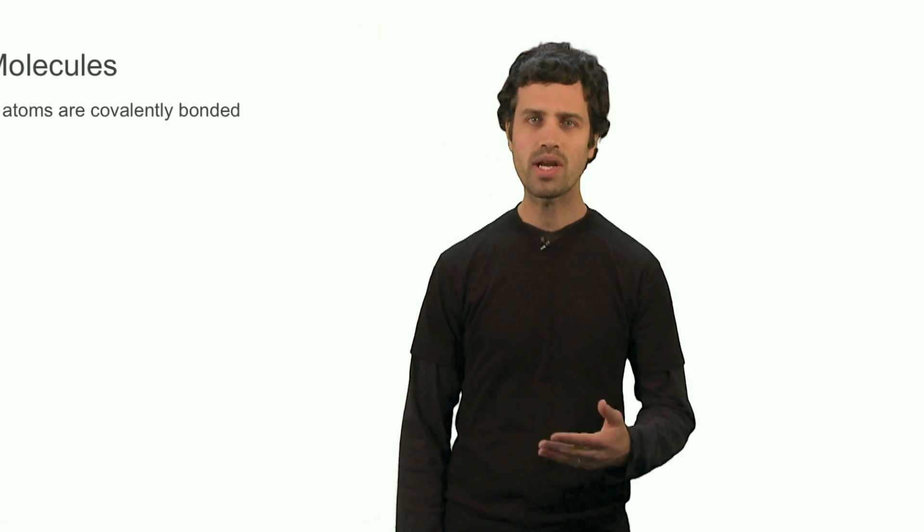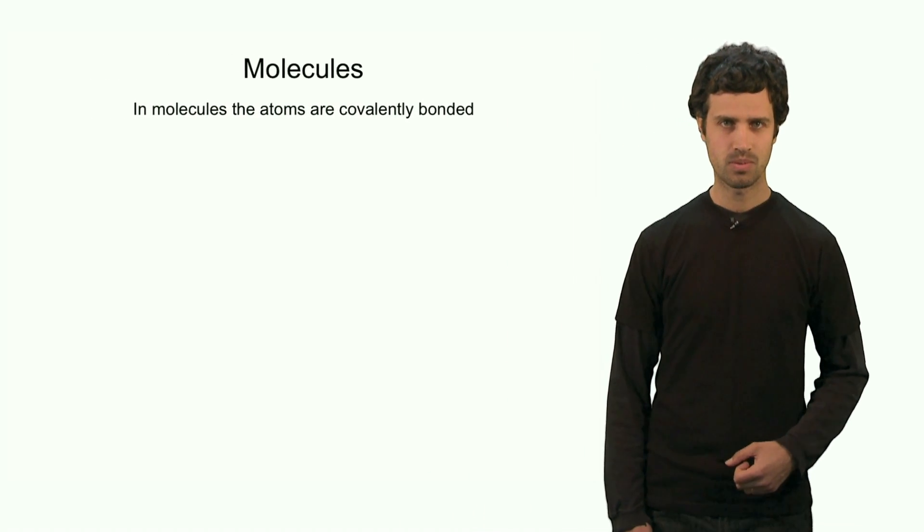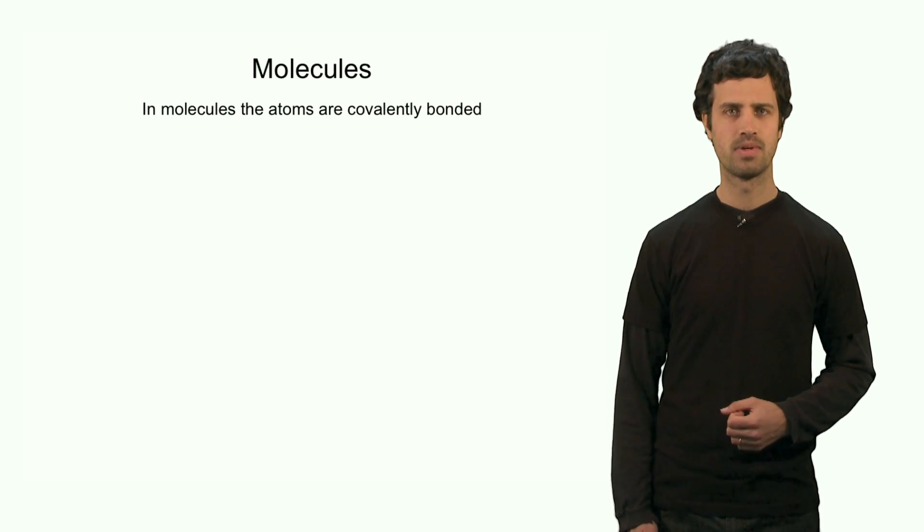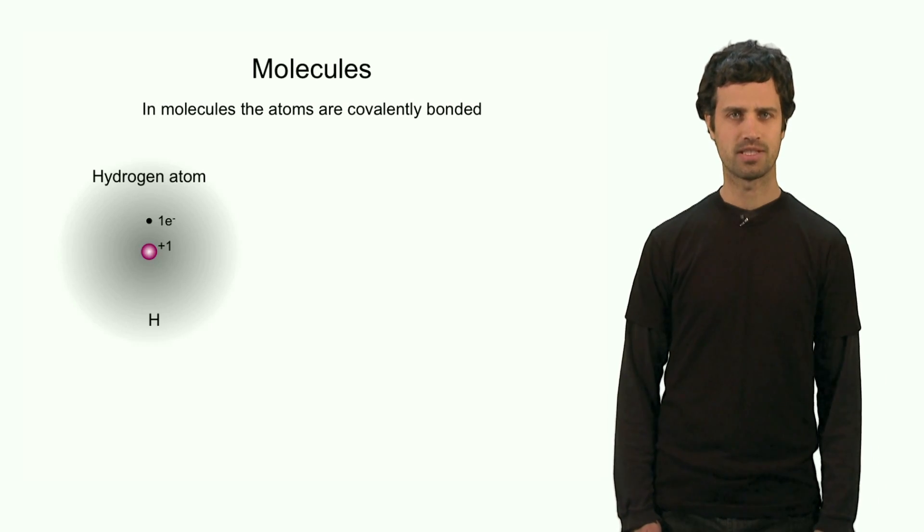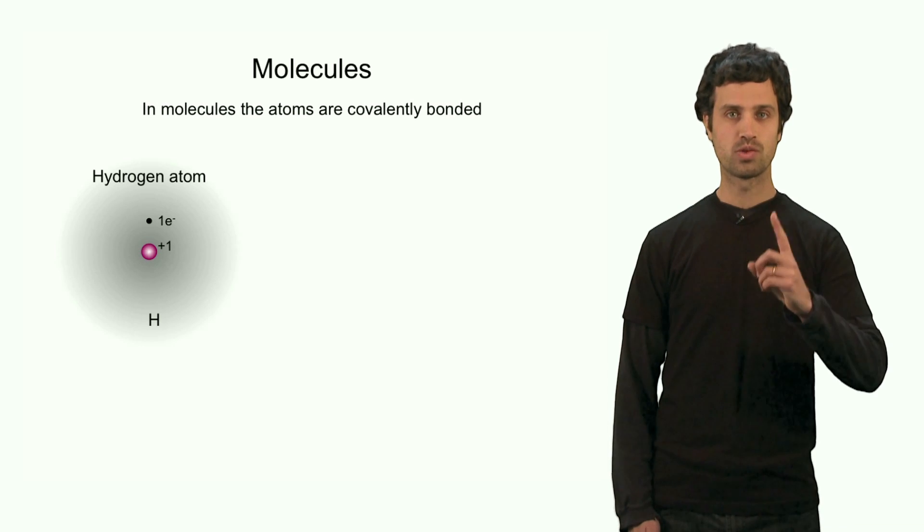And the word molecule represents a class of compounds in which the bonding is predominantly covalent. So, what is a covalent bond? Let us look at a single atom first. Here is a single hydrogen atom. The hydrogen atom, as we know, has one electron.